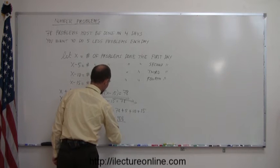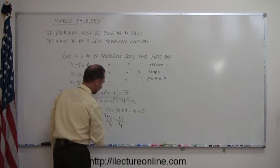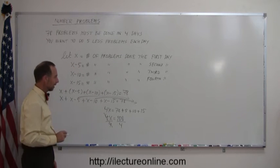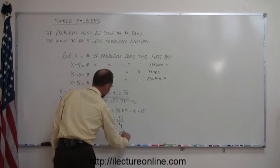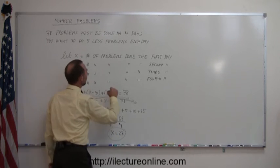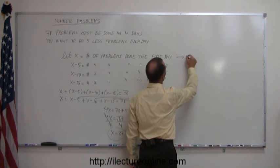Divide both sides by the numerical coefficient in front of the x, the 4, that cancels. And so x equals 27, which means on the very first day you must do 27 problems.